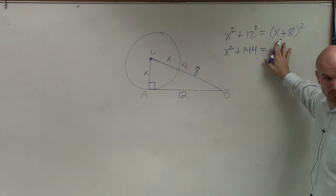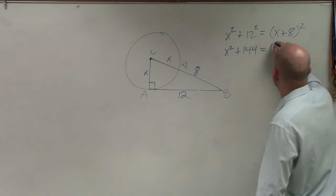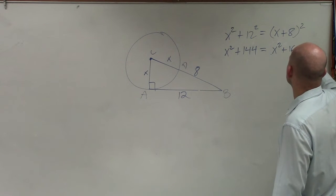This is what we call a perfect square trinomial. So when I FOIL this out, remember FOIL? You guys did those? When you FOIL that out, you get x² + 16x + 64.